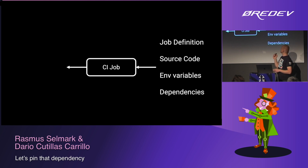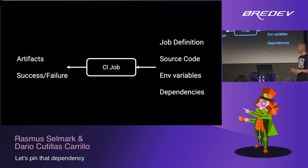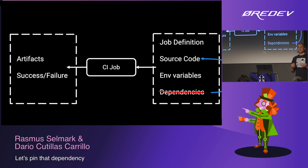Let's look at CI. We have a CI job that takes some input: the job definition, the state of the source code at the time, environment variables or other configuration, and dependencies. The job definition is, for instance, the YAML used in GitHub Actions for defining that job. Dependencies, as we've seen, can be tools that are also used as part of running CI. The output is some artifacts and a result — success or failure. We want that to be deterministic all the time. The exercise here is: how can we actually represent the dependencies in source code and make that deterministic?